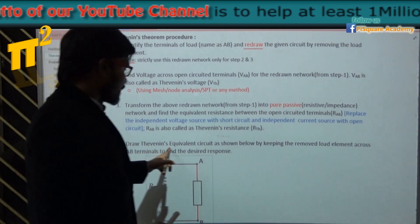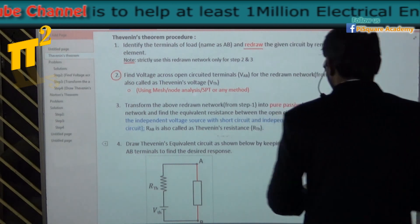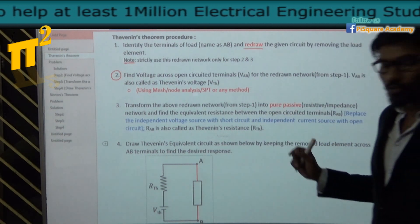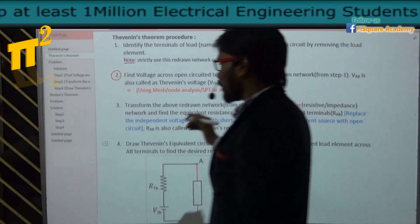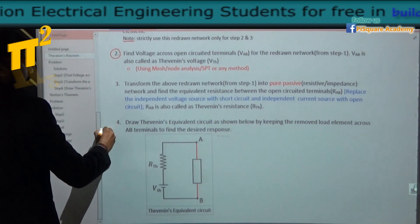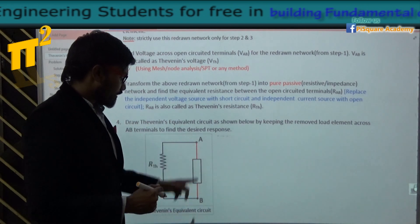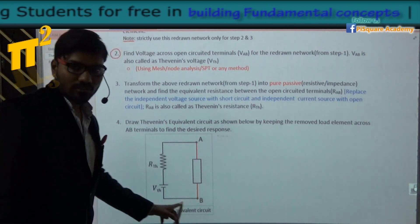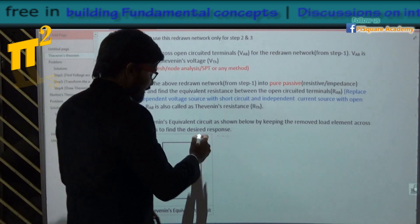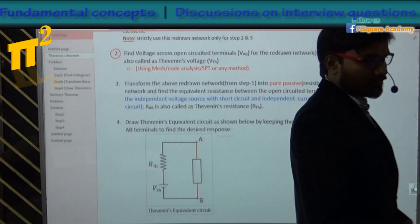Step 4: draw the equivalent circuit by placing back the removed load element. You redraw this simple network, put the load element back in, and solve for the desired response — voltage or current.